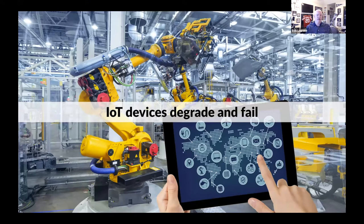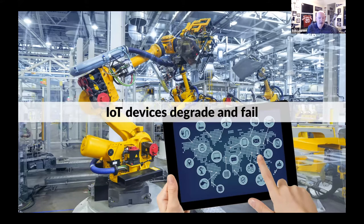IoT devices being hooked up to manufacturing equipment can detect when they're about to fail. The devices themselves can fail — you might see an IoT device that's off by 1%, 2%, 5%, getting to 10%, and ultimately failing. Being able to detect when those devices are degrading and ultimately failing is something you need to stay on top of, especially if you're using that machinery for critical manufacturing tasks.